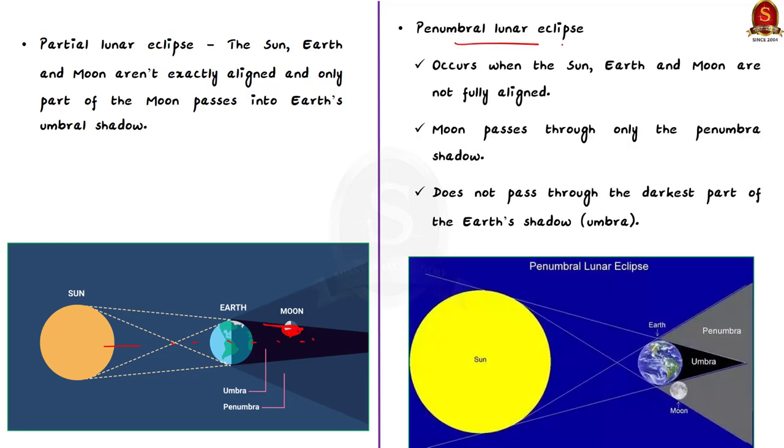Finally, there is the penumbral lunar eclipse. It occurs when the sun, earth and moon are not fully aligned. In the case of penumbral lunar eclipse, the moon passes through only the penumbral shadow of the earth and does not pass through the darkest part of its shadow, that is the umbra.